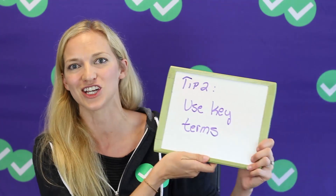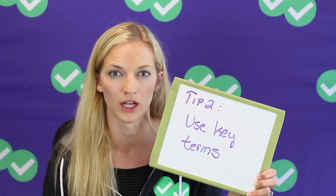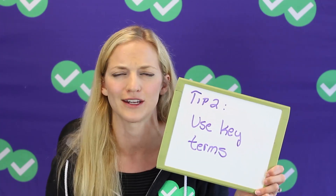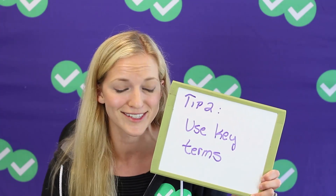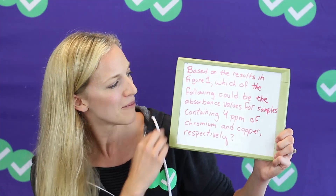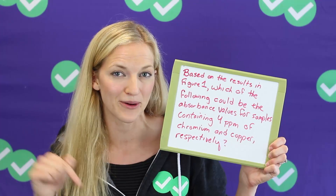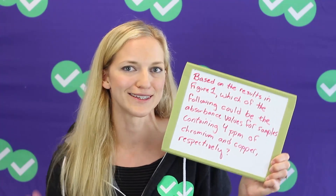Tip number two is to use a strategy I call using key terms. It takes a little bit of practice, but you're training your brain to tune out all the fluff in the question so you can hone in on the words you're looking for in the diagrams or passage. This really helps avoid taxing your brain — this is the last multiple choice section on the test — and avoids having to reread the question several times and still not understand it. We're going to practice this with a question, and we have full lesson videos on this in our ACT science product at act.magoosh.com.